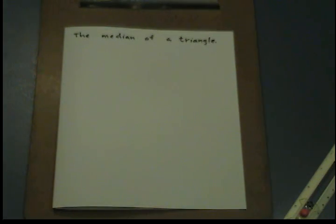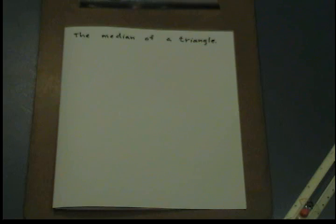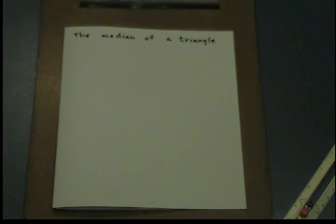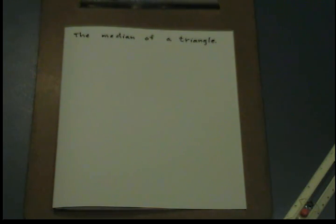How do we construct the median of a triangle? In order to construct the median of a triangle, you must understand what it means to have a median, and you also must know how to bisect a segment. A median is connected from a vertex to the midpoint of the opposite segment. So our goal is to draw a triangle, find the midpoint of the opposite segment, and then draw a line connecting the vertex to that midpoint.